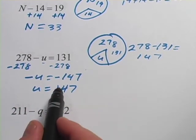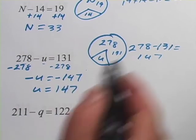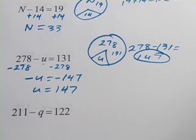Hopefully that makes sense. If a negative u is a negative 147, a positive u is a positive 147. And that would be exactly what we came up with over here.